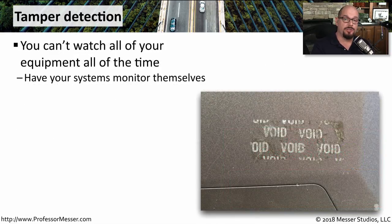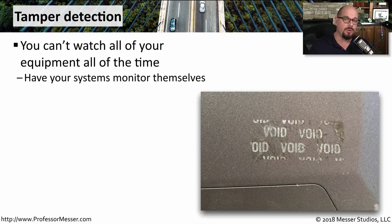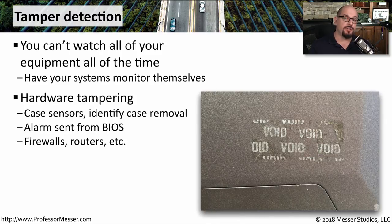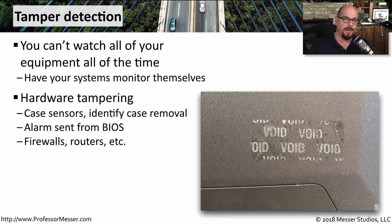As your organization gets larger, it becomes impossible for any single person to be able to keep track of all of the different assets in your organization. So you need some way for these devices to monitor themselves, and if anybody tampers with that equipment, you'll be immediately notified. For example, many servers and other desktop components have case sensors built into the device. If anyone removes the cover from that device, an alarm is immediately sent from the BIOS. This way, you're able to know exactly when a particular component may have been altered or modified by someone else.